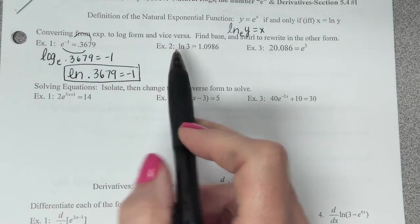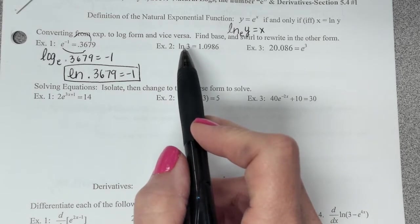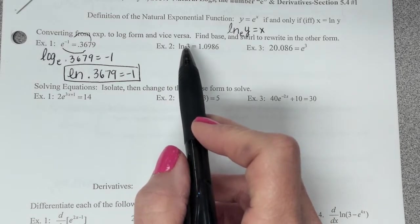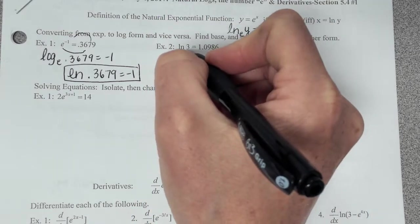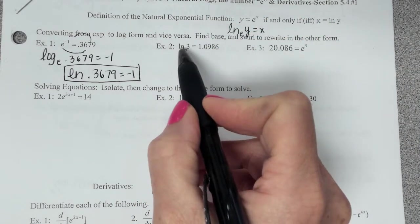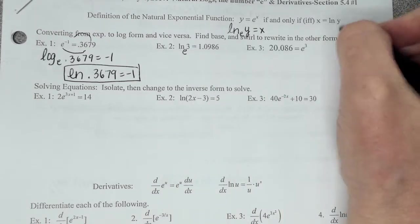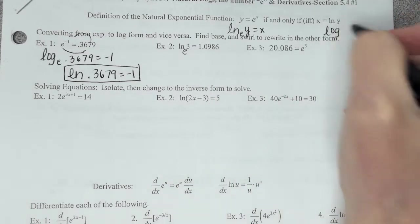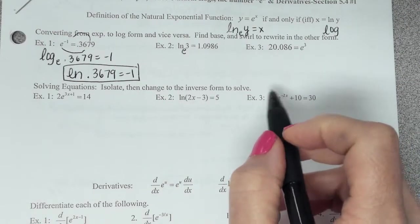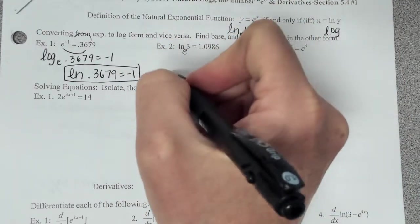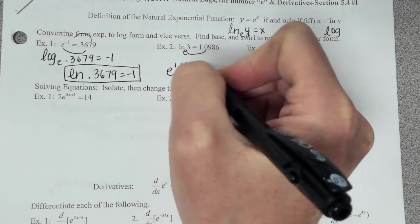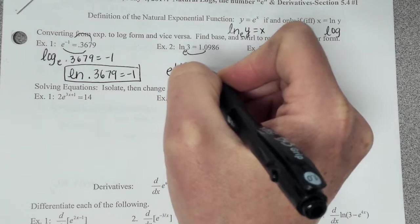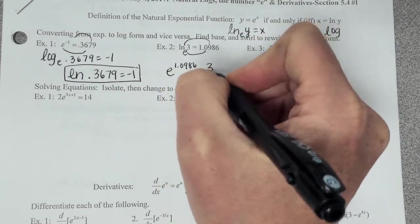Number two. We start with a natural log, so we want to rewrite this in exponential form. So we find the base. The base is e. Anytime we have a natural log, the base is e. Anytime we have a regular log, what's the base? 10. So we have a base of e here. So it's going to be e, swirl it around, 1.0986 equals, back around, 3.